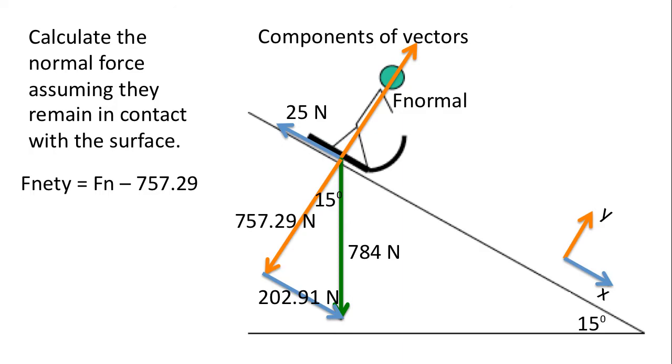F net y is the difference of the normal force and the force of gravity in the y direction. A common student error is that instead of substituting fgy, students sometimes will substitute fg. Please be aware of that. Once again, f net is equal to ma. And the acceleration in the y direction is zero.